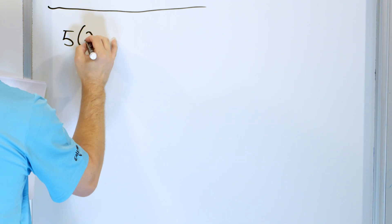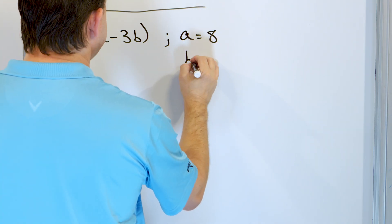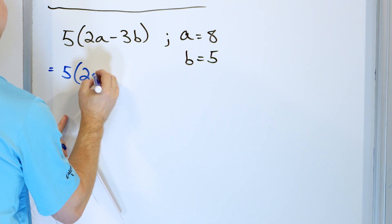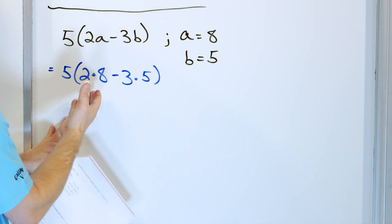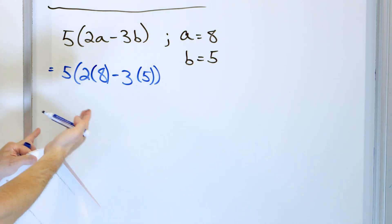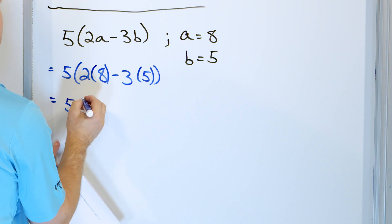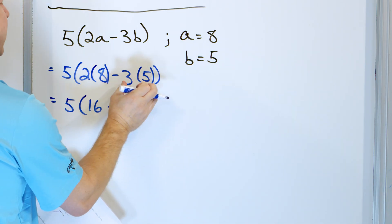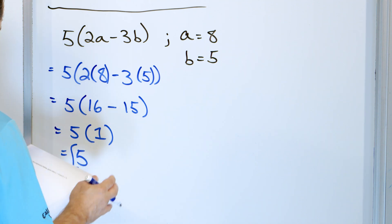Let's look at 5 times (2 times a minus 3 times b), with a equal to 8 and b equal to 5. I put a equals 8 and b equals 5 in their locations. Inside the parentheses, I do all the multiplications first: 2 times 8 is 16, and 3 times 5 is 15. Then I do the subtraction: 16 minus 15 is 1. Then 5 times 1 is 5. That is the final answer.